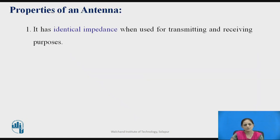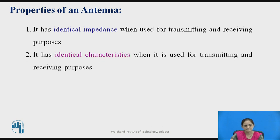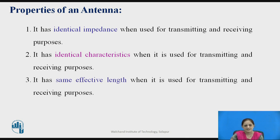Now the properties of an antenna. The first property: it has identical impedance when used for transmitting and receiving purposes. The second property: it has identical characteristics when used for transmitting and receiving purposes. The third property: it has the same effective length when used for transmitting and receiving purposes.